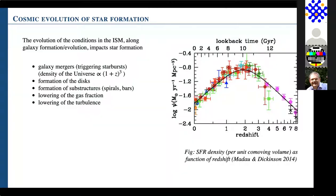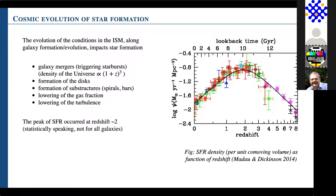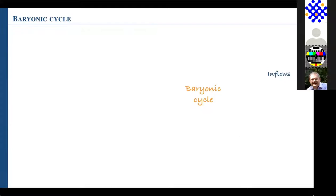For a Milky Way-like galaxy, the disk is not in place before redshift around 4, and that's even more true for substructures like spirals and bars — it takes time for them to form, sometimes they're destroyed and need to reform. In addition you have a near-constant lowering of the gas fraction in your galaxy, changing the physical conditions, and you lower the level of turbulence with time. All this combines in a complex and not fully understood way, but we know empirically that the star formation rate density peaks at redshift around 2.